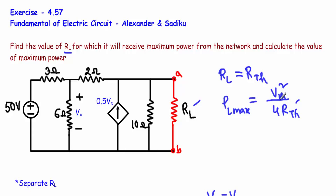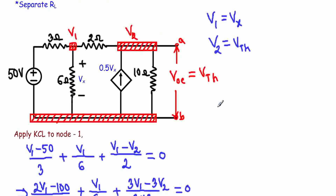First, I will calculate the Thevenin voltage. To do that, I have to remove the load resistor from the network. The voltage across these two open terminals will be known as the Thevenin voltage, or open circuit voltage VOC.